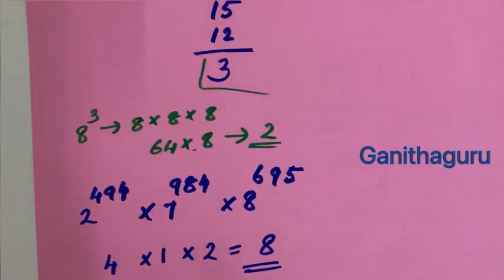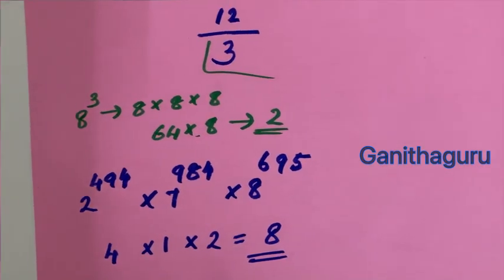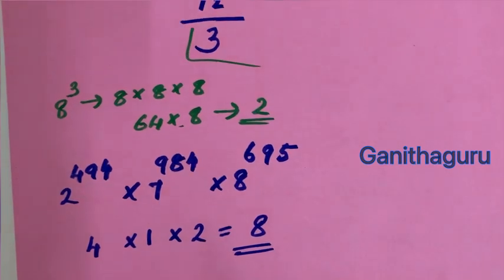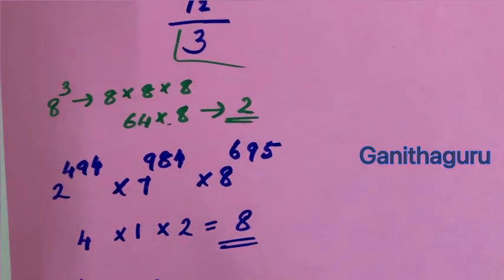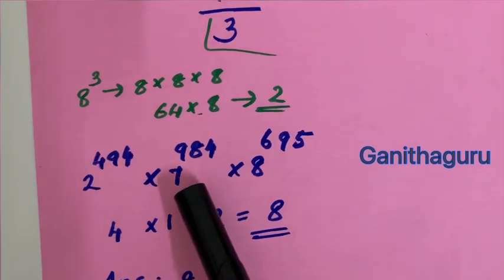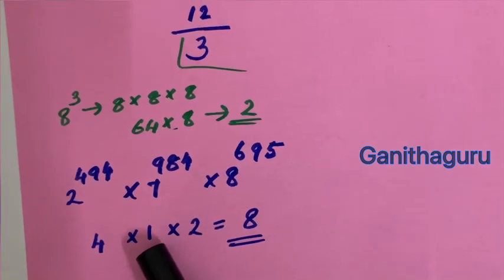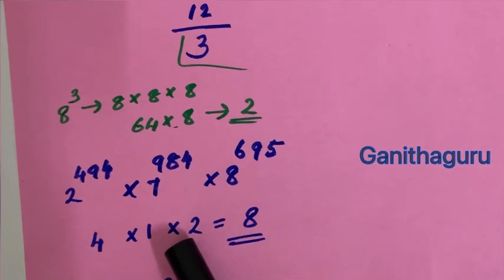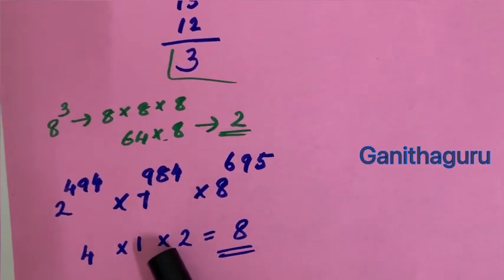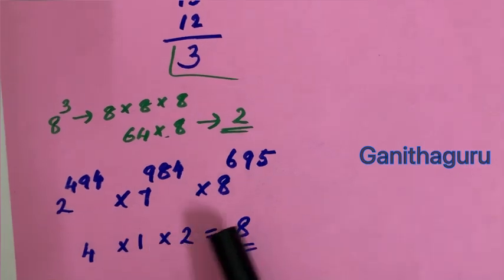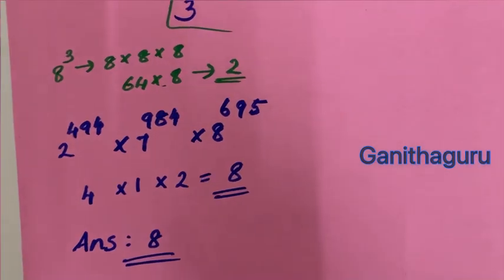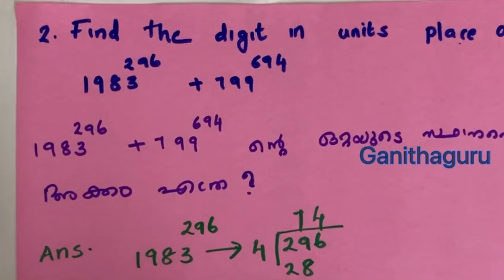So for 2 raised to 494, 7 raised to 984, 8 raised to 695: the last digits are 4, 1, and 2 respectively. Multiply 4 into 1 into 2 is 8. The answer is 8.